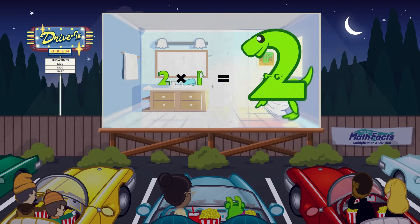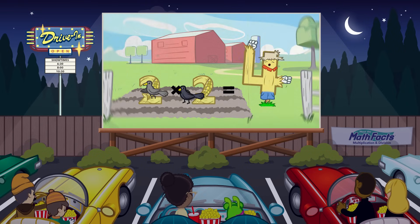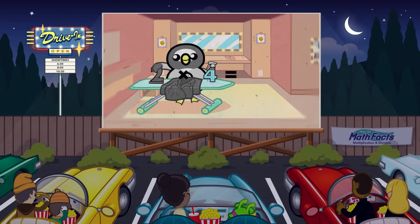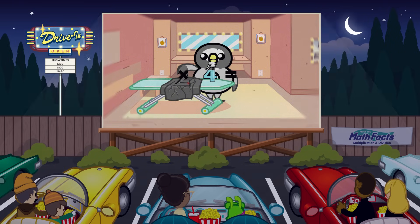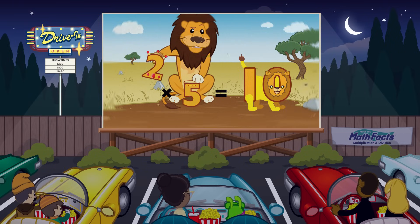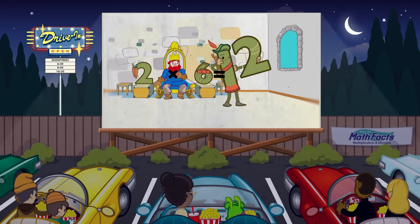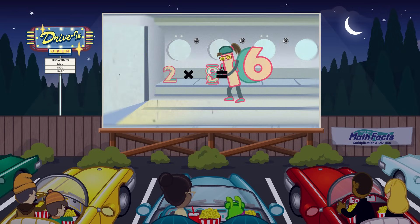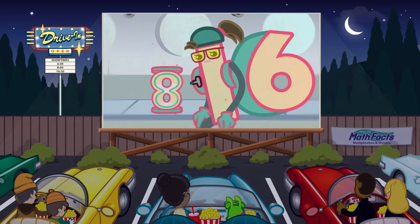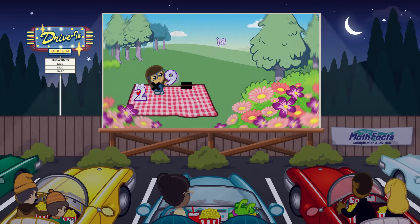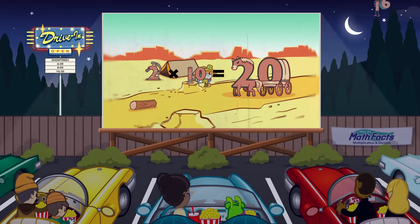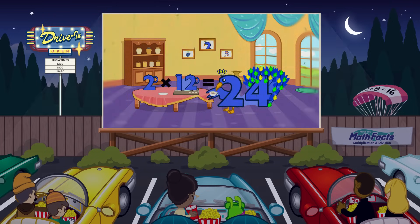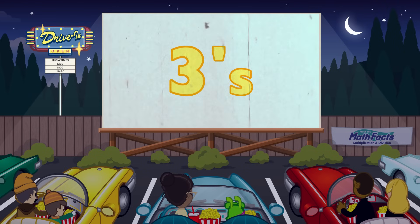2 times 1 equals 2. 2 times 2 equals 4. 2 times 3 equals 6. 2 times 4 equals 8. 2 times 5 equals 10. 2 times 6 equals 12. 2 times 7 equals 14. 2 times 8 equals 16. 2 times 9 equals 18. 2 times 10 equals 20. 2 times 11 equals 22. 2 times 12 equals 24. Let's try threes!